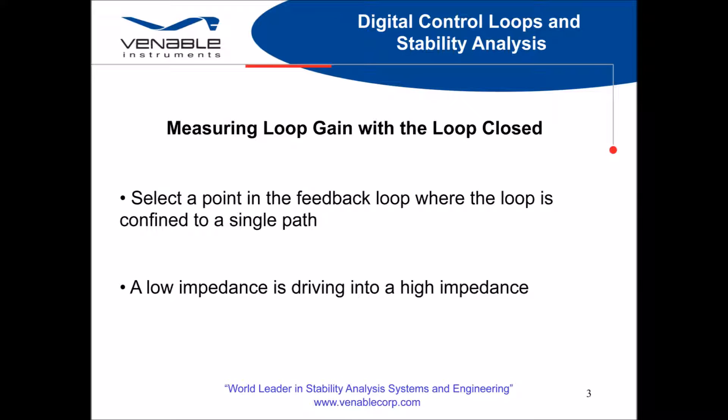The closed-loop setup has some considerations to be taken into account. We have to select a point in the feedback loop where the loop is confined to a single path to provide us our signal injection point. Typically, this point will also be used to measure our total feedback loop. We want this point to be in a spot where you have a low impedance feeding into a high impedance in the feedback loop. This will typically be at the point where the output of the power stage feeds into the error amplifier.